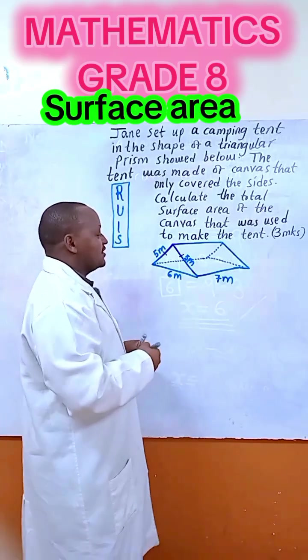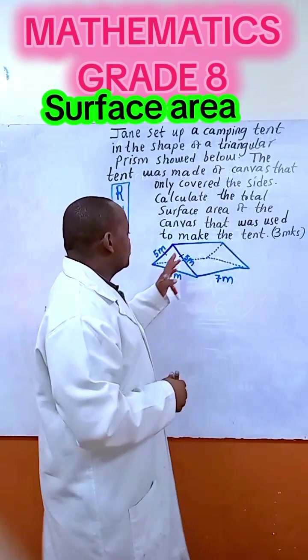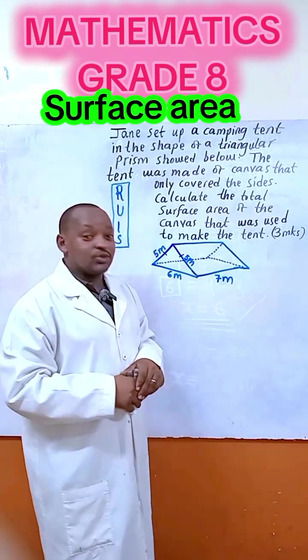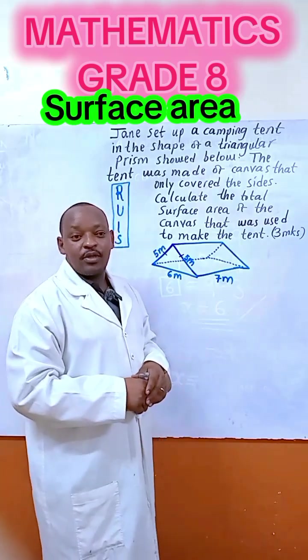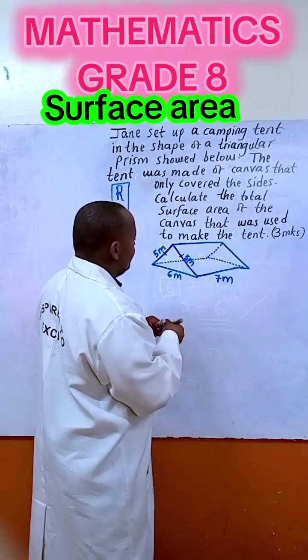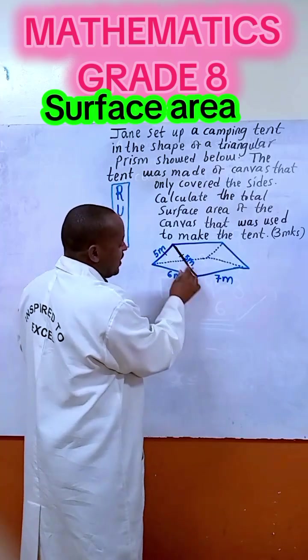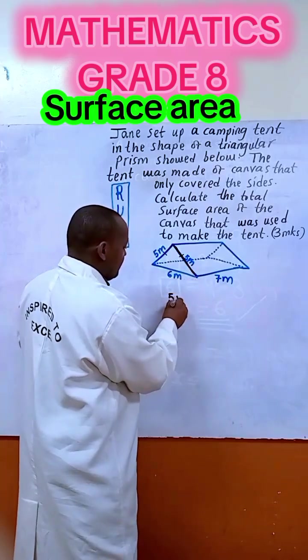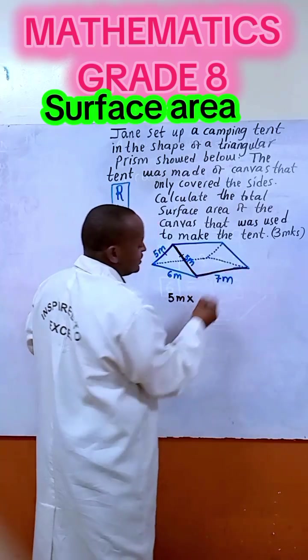So we need to know the surfaces. How many surfaces are we going to calculate for the total surface area? We have the two standing, let me show you. We have this side, can you see it? It is measuring 5 meters by this side. Remember that is a rectangle.